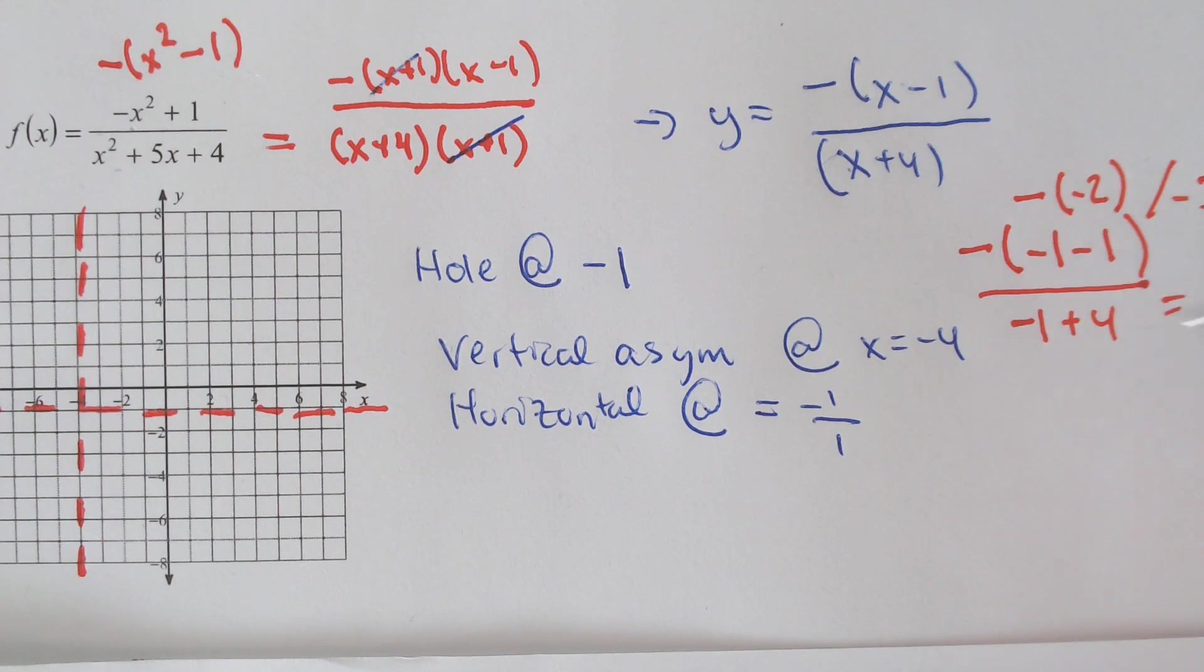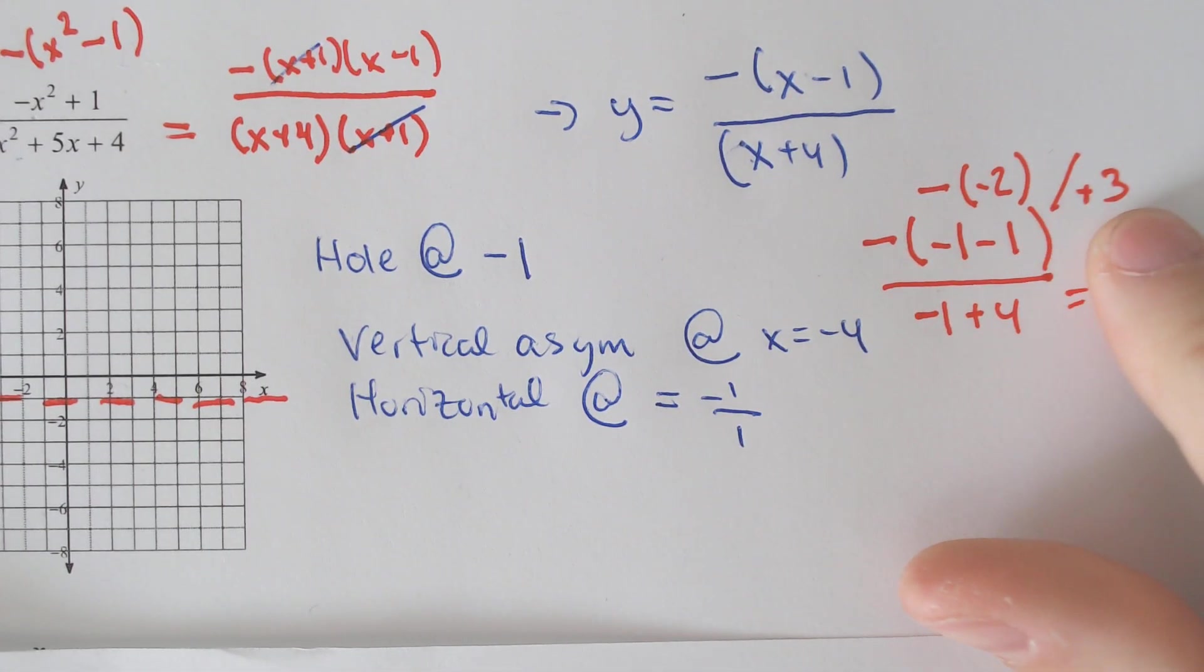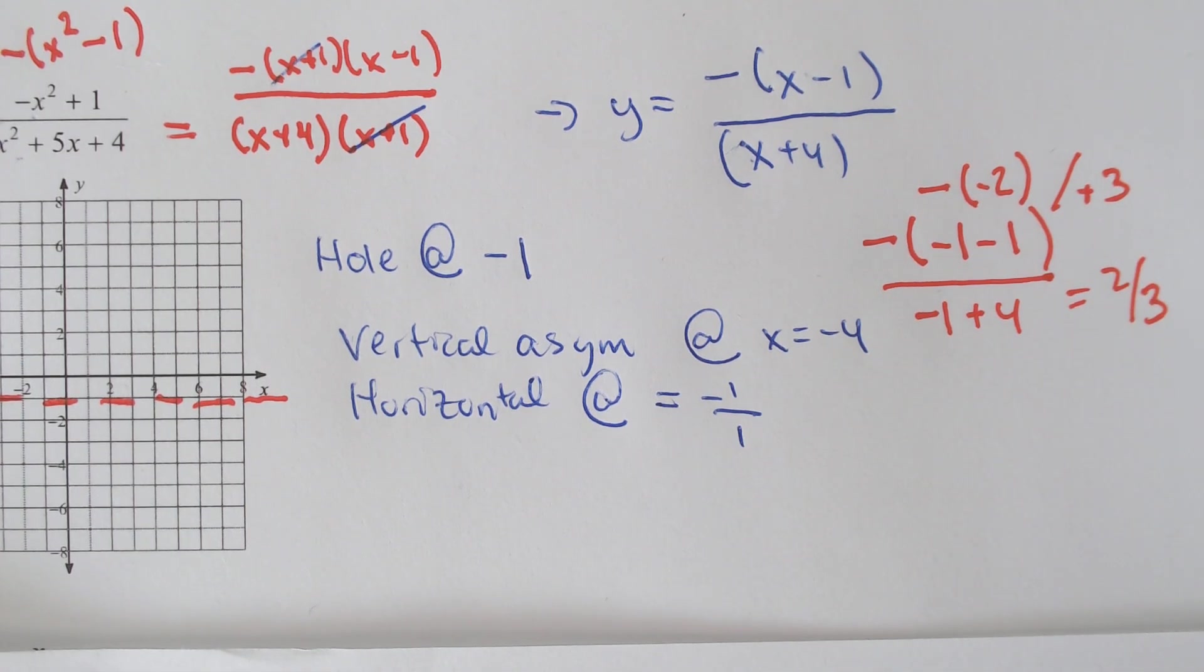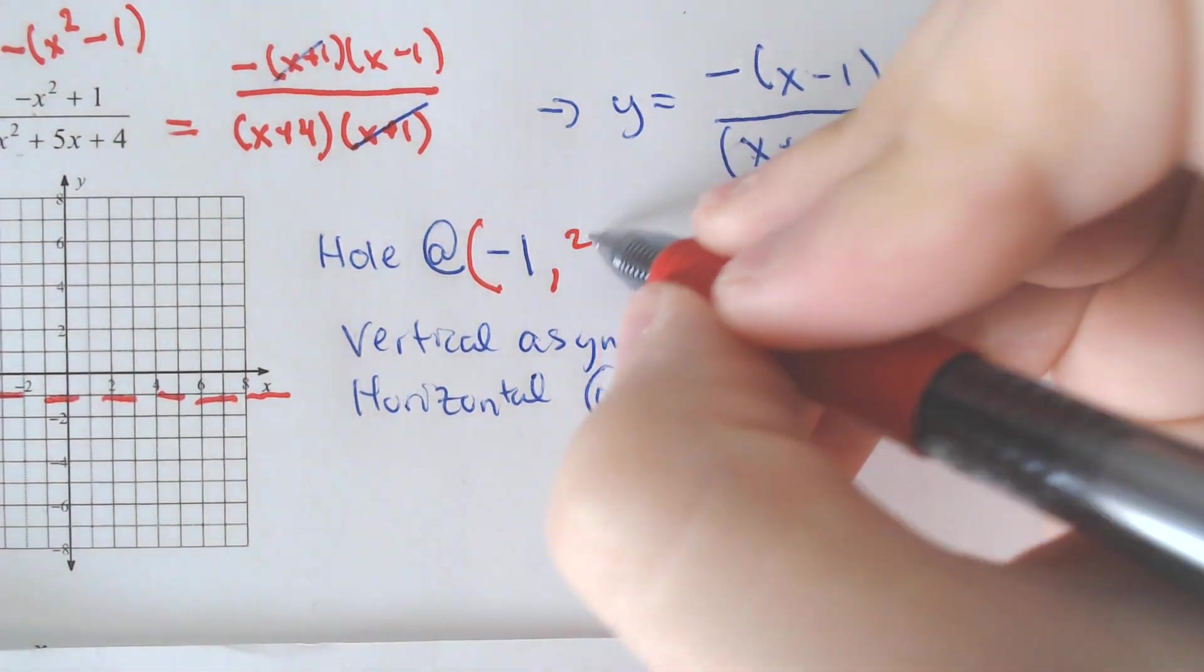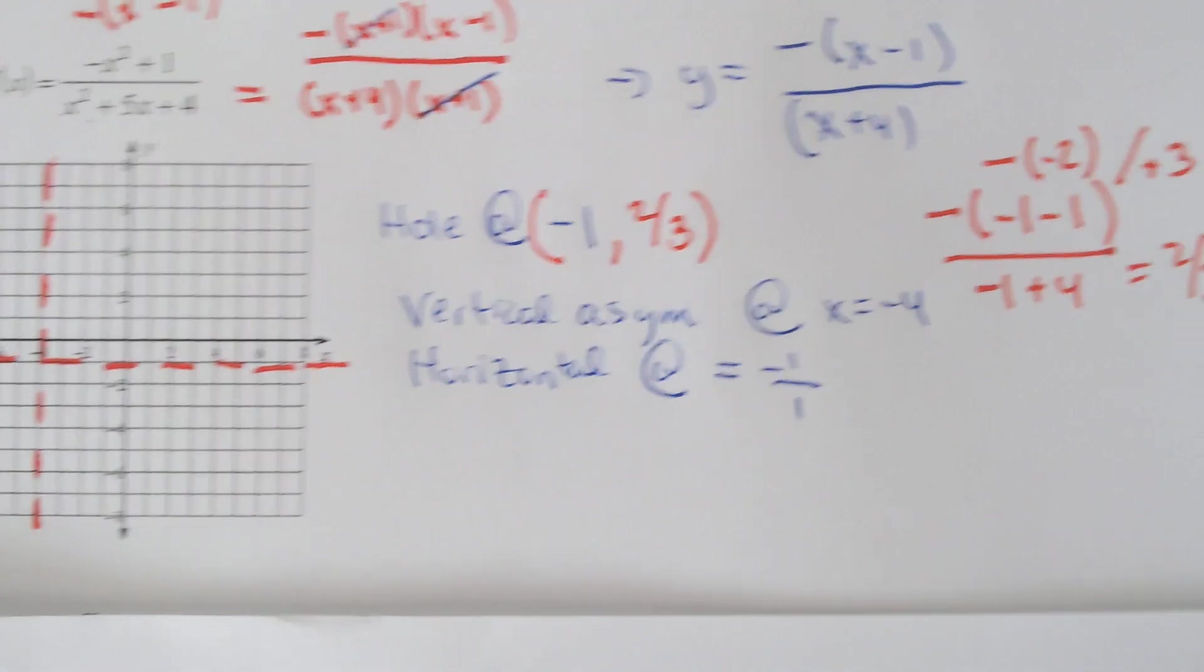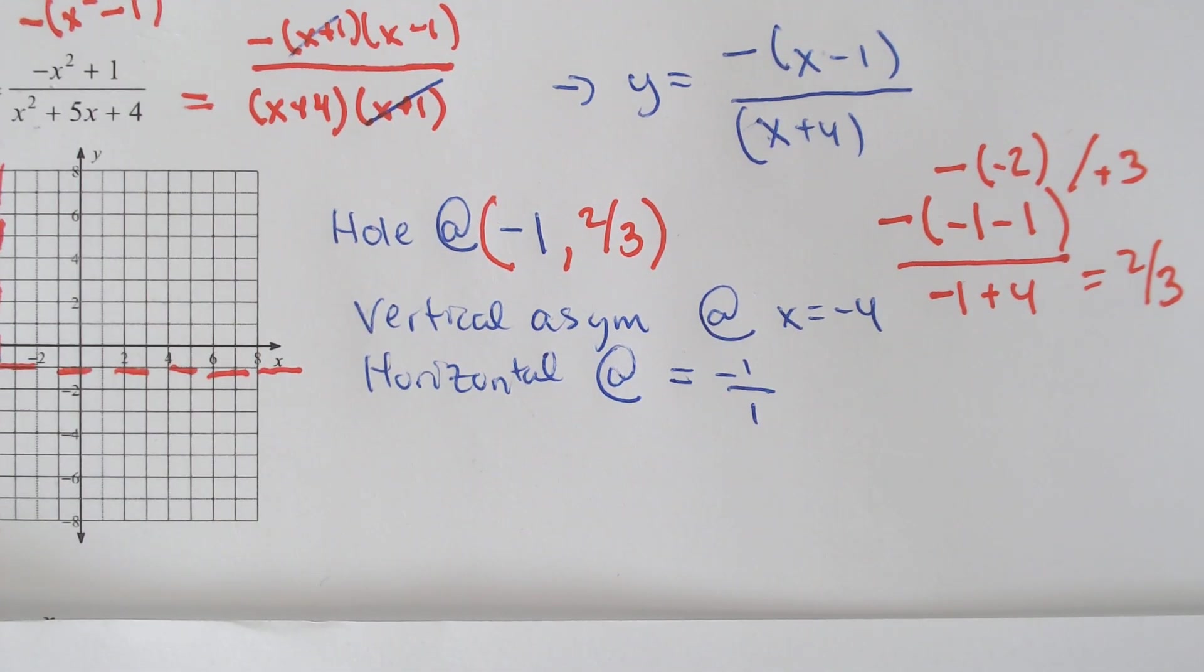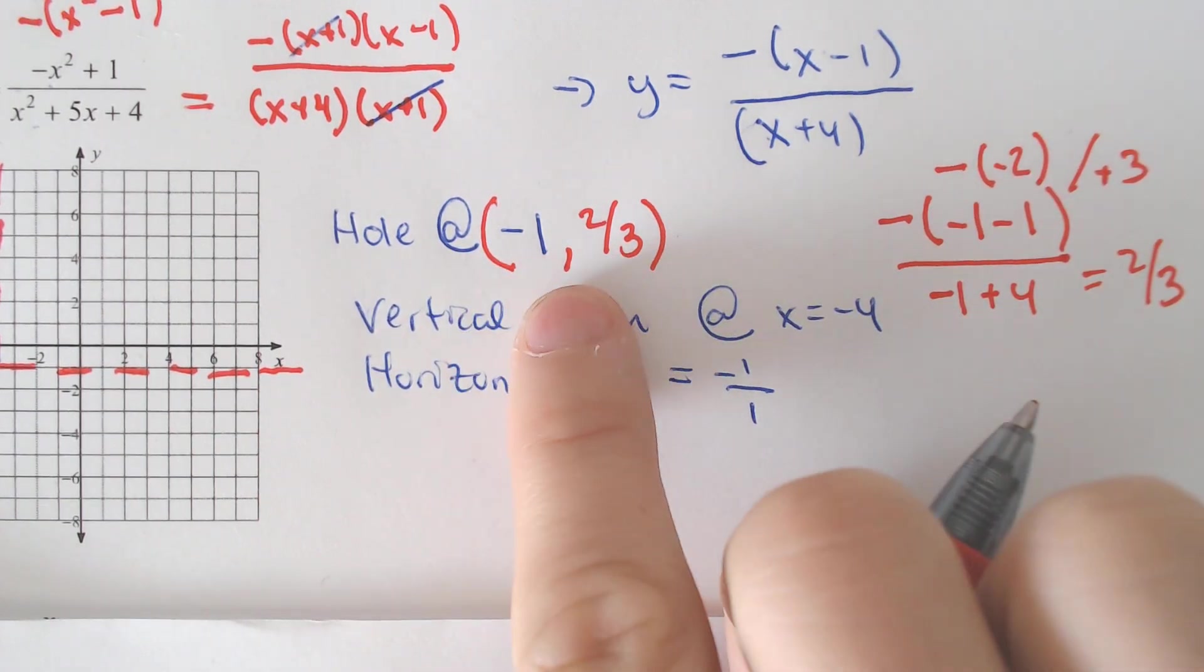See, that's over negative—not negative 3, positive 3. So negative negative 2 divided by positive 3 ends up being two-thirds. So specifically we have a hole at x is negative 1, but the y value is two-thirds. Okay, that tells you two things.